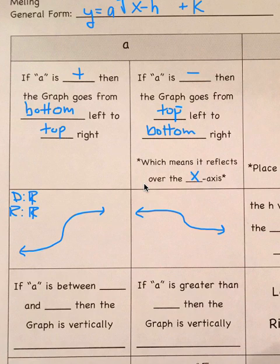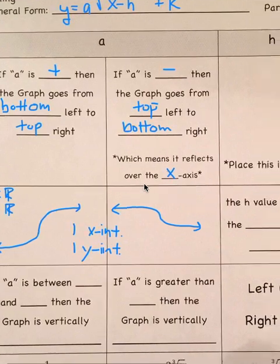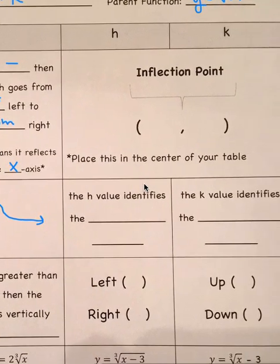Domain and range are both all reals for both cases. Each of these graphs has one x-intercept and one y-intercept — one and only one of each. You'll notice the big difference between these graphs and cubic graphs: cubes grow very quickly, but cube roots do not. It takes them a while to get bigger.